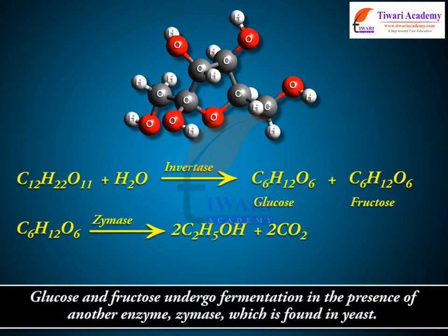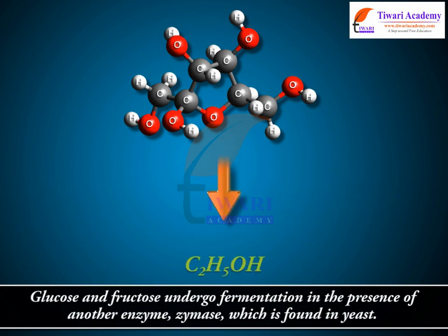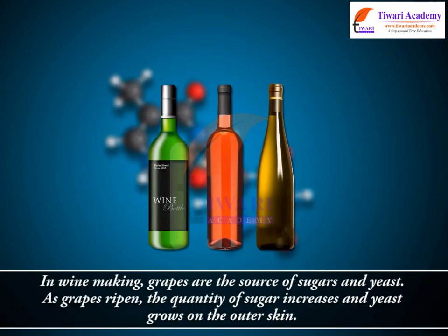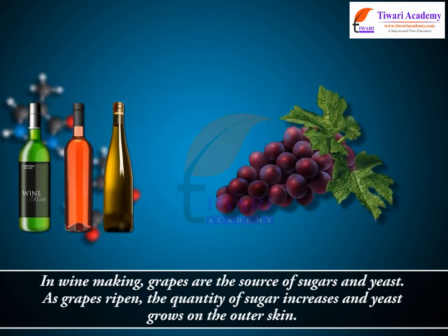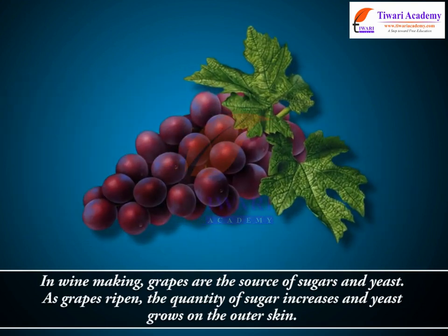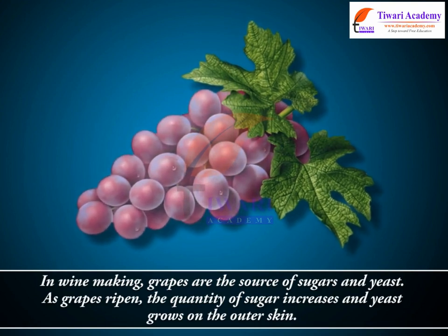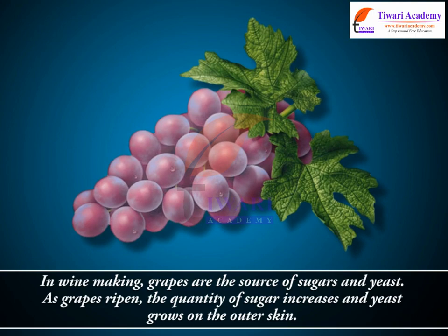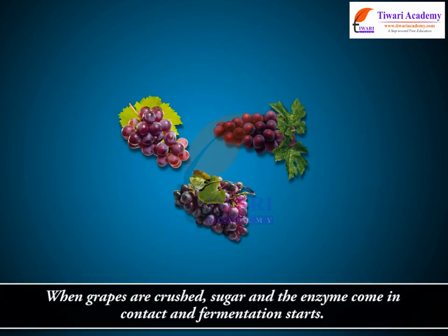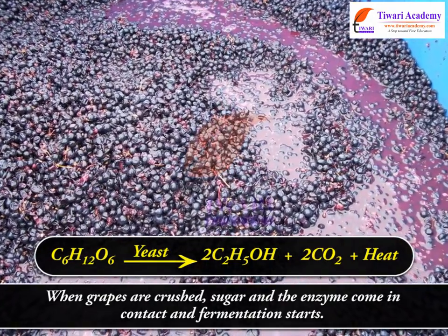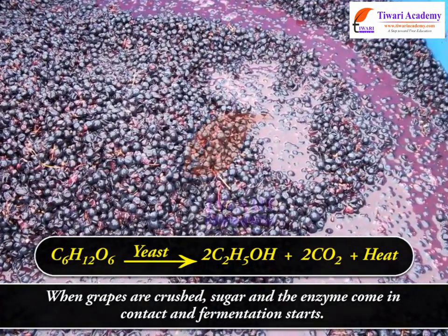Glucose and fructose undergo fermentation in the presence of another enzyme, zymase, which is found in yeast. In wine making, grapes are the source of sugar and yeast. As grapes ripen, the quantity of sugar increases and yeast grows on the outer skin. When grapes are crushed, sugar and the enzyme come in contact and fermentation starts.